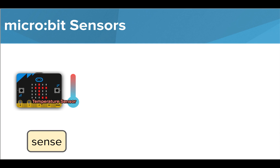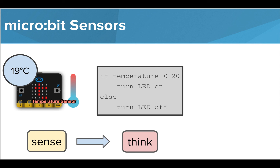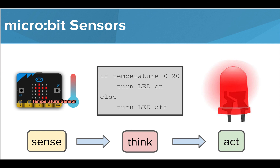Here's an example. We can use our temperature sensor to find the temperature of the room. It finds that the temperature is 19 degrees Celsius. It then thinks by applying this value to the program that has been written. It sees that if the temperature is less than 20, a light, or LED, should turn on. So it acts on this and lights the LED.